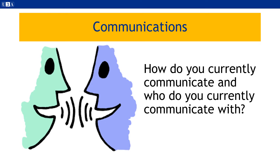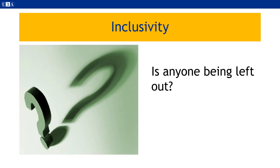External communications can take many forms, including social media, depending on what you are trying to achieve and the audience you are trying to reach. Nearly all U3As have members who are not on email, although it is noticeable how many more have taken the plunge as a result of the COVID-19 pandemic. It is vital that these members are kept fully informed, although it may take extra work in order to do so.